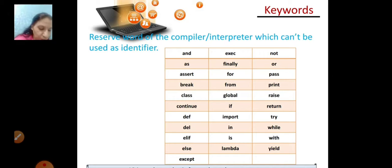To know the list of keywords available in Python, first import keyword, then write print keyword.kwlist. When you press enter, the list of keywords will be shown.